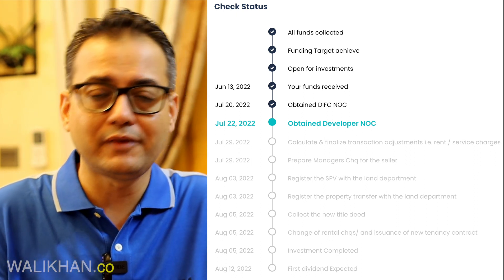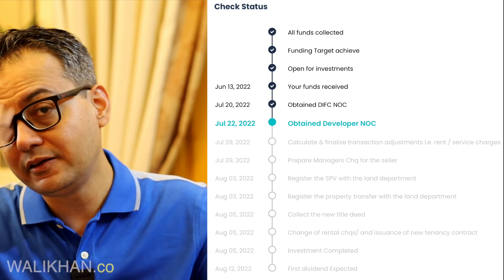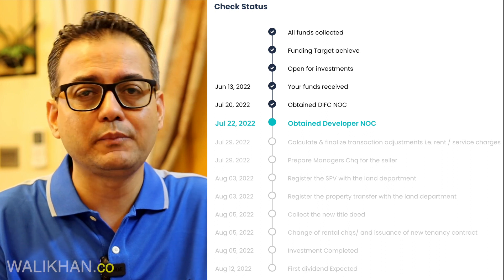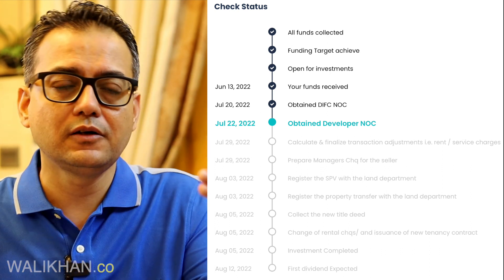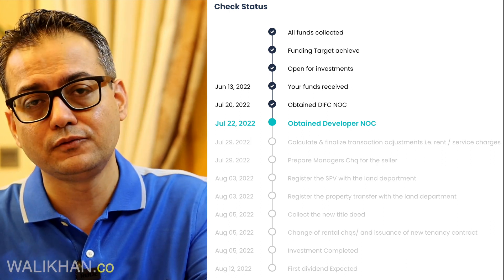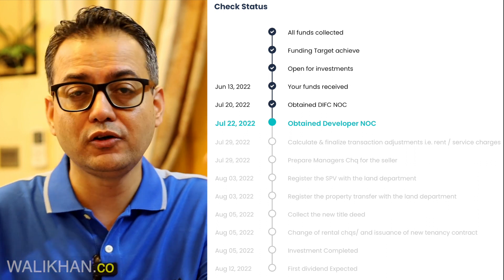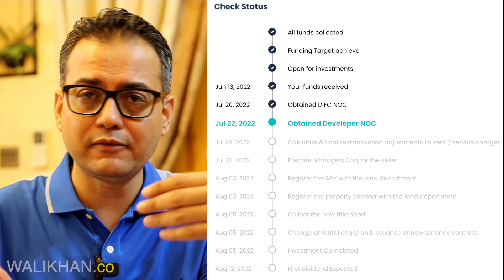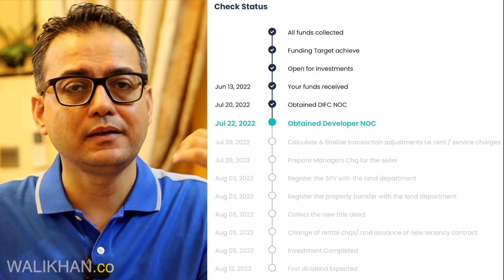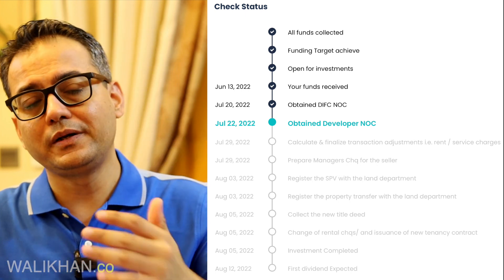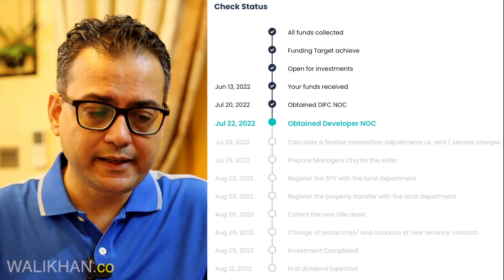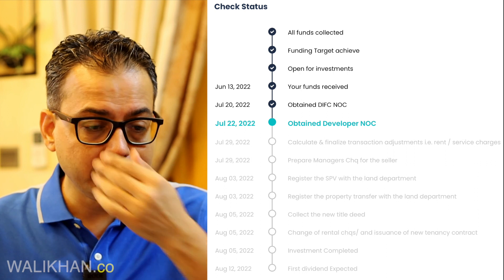There is a bit of time involved in this process. Let's say a property arrives on the SmartCrowd platform on July 1st — it will stay on the platform until July 31st. Within that timeframe, if investors are found (which normally happens), those investors are locked in and the property is closed. After that, the DIFC NOC is obtained, which is normally received without issue.